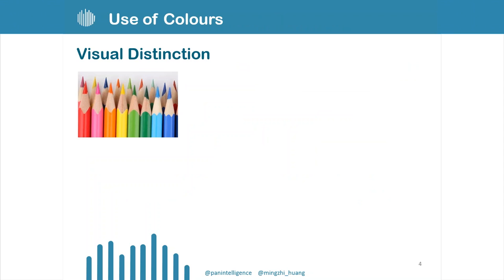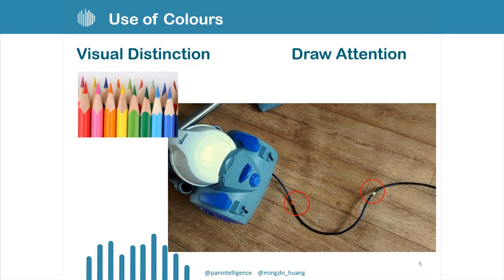In terms of good use of colors, colors can be used for different purposes. You can use color for visual distinction and you can also use it for drawing people's attention. If you look at this hoover, the wire actually has a bit of yellow and a bit of red. If you keep pulling, it might just break. Red might just represent danger.